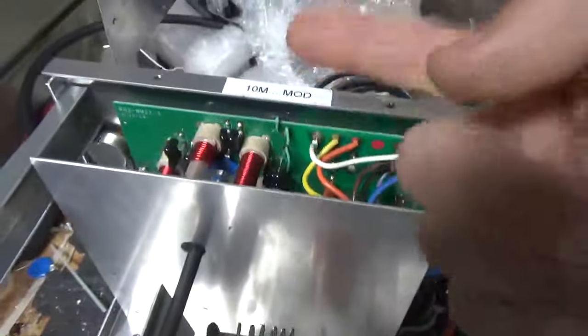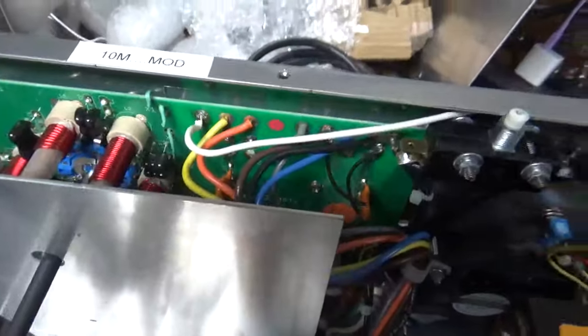Deoxidize the input rotary switch, the band switch. Remove the gas discharge tube off the board and the metal oxide varistor off the board.